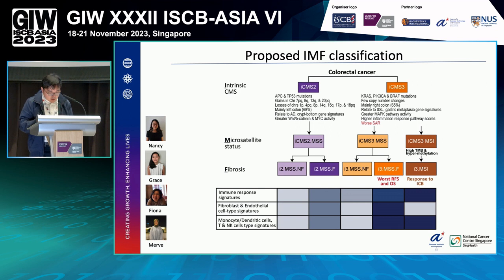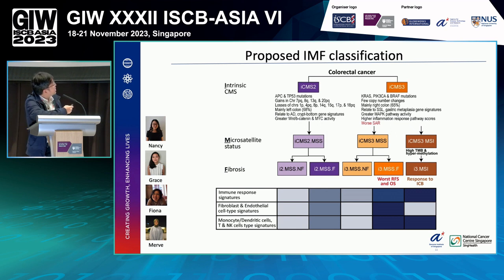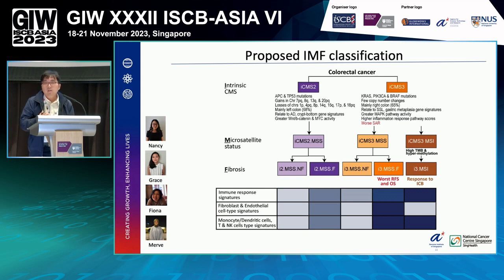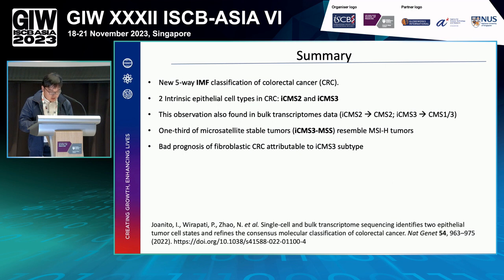Based on these results, we propose a reorganization of the four-group CMS classification into five groups across three different biological layers: intrinsic epithelial status, microsatellite status, and presence or absence of fibrosis. We call this the IMF classification. We stratify tumors into five different classes, as shown in this figure. Due to time limitations, I won't be able to explain the biological insights of these two subgroups in detail, but we can discuss further afterwards.